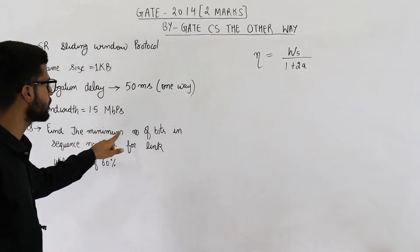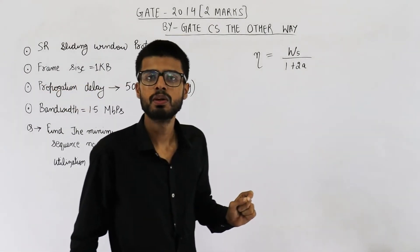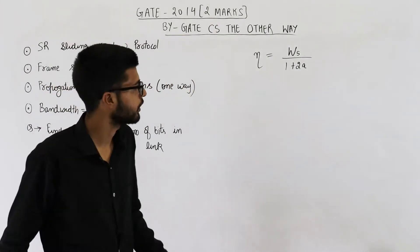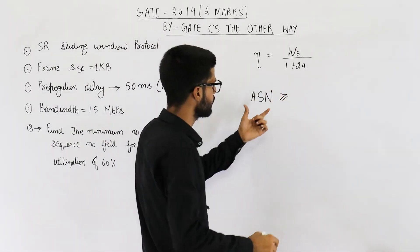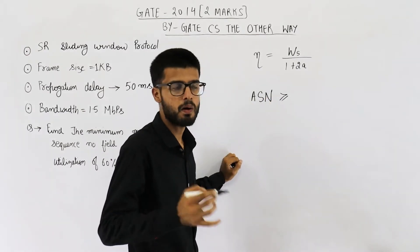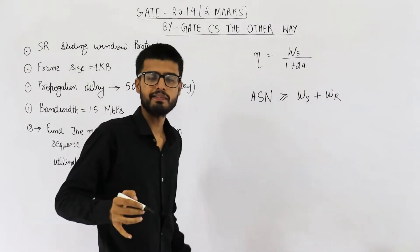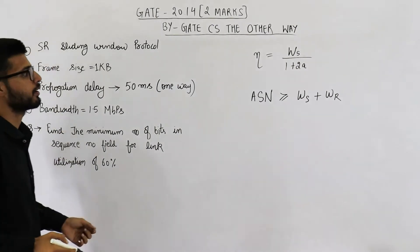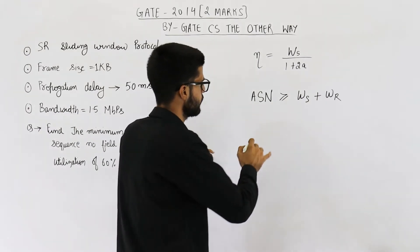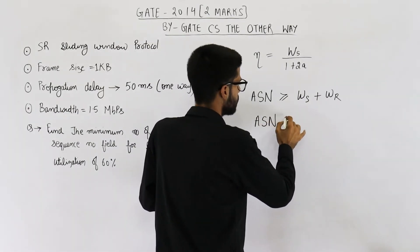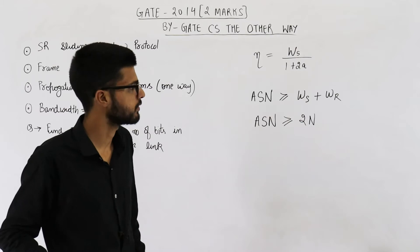Now they are asking minimum number of bits in sequence number field. For this, first we need to determine how many minimum sequence numbers are required. So formula for minimum sequence numbers is available sequence numbers must be greater than or equal to sender window size plus the receiver window size. So ASN available sequence numbers must be greater than or equal to 2m where m is the sender window size or the receiver window size.